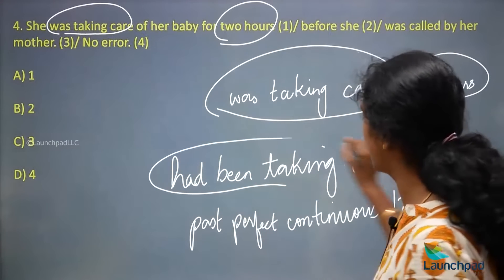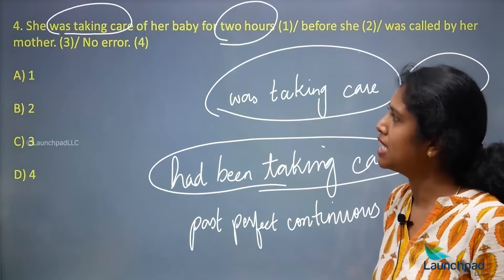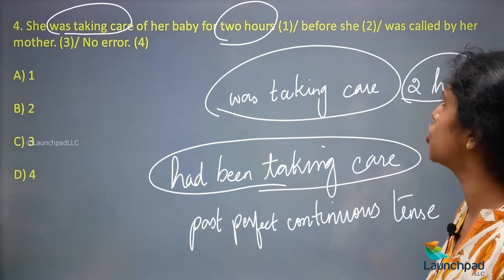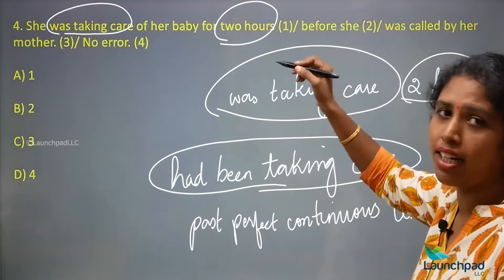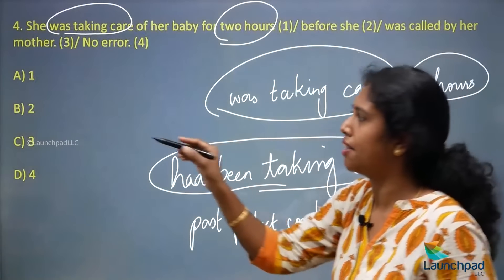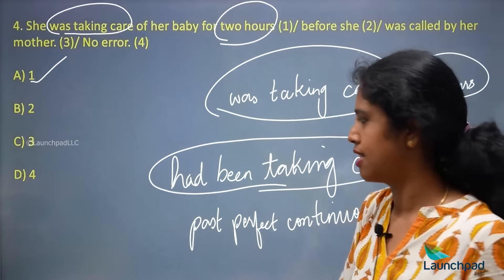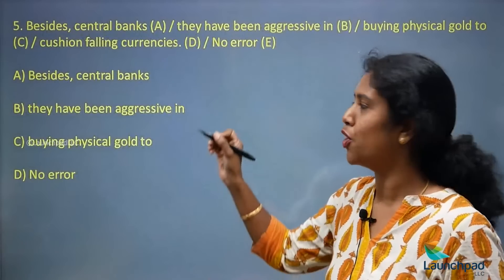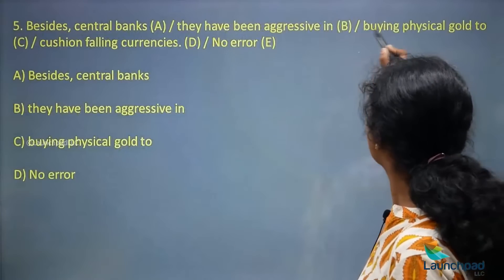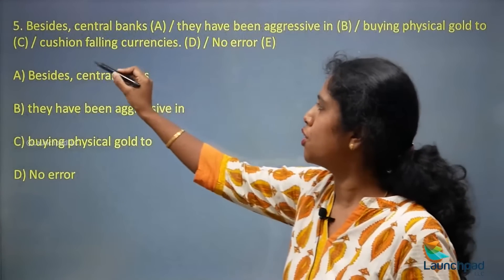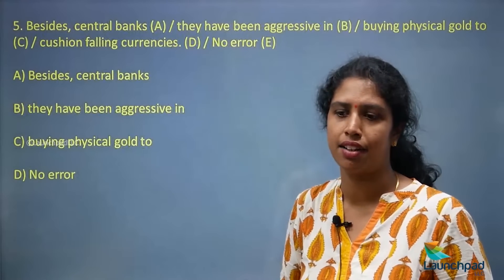'Had been taking care' should have been given there. So the error is in option A. Now the next question: 'Besides central banks, they have been aggressive in buying physical gold to cushion falling currencies.' Where is the error? Which part of the sentence contains the error? If there is no error, choose 'no error.'